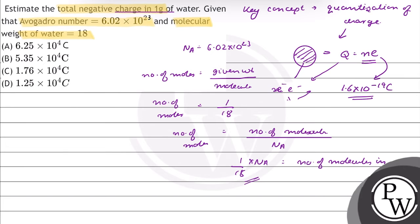In 1 water molecule, there is 1 oxygen atom and 2 hydrogen atoms, giving a total of 10 electrons. So the number of electrons in 1 gram of water equals 1/18 × Avogadro number × 10.